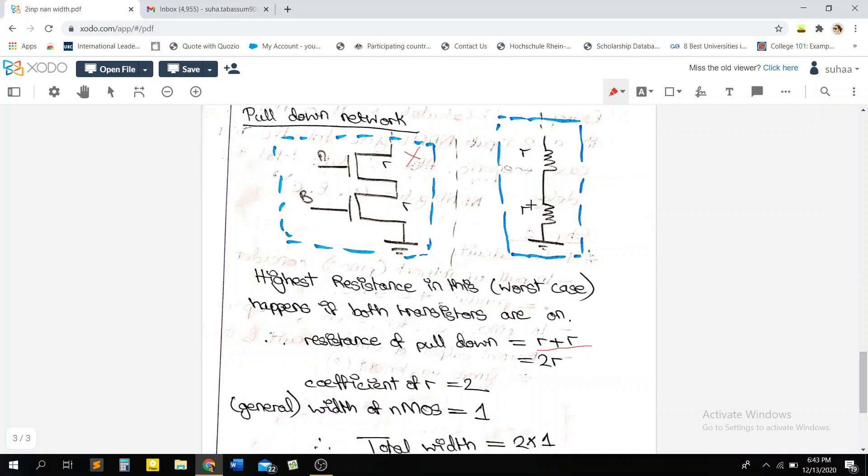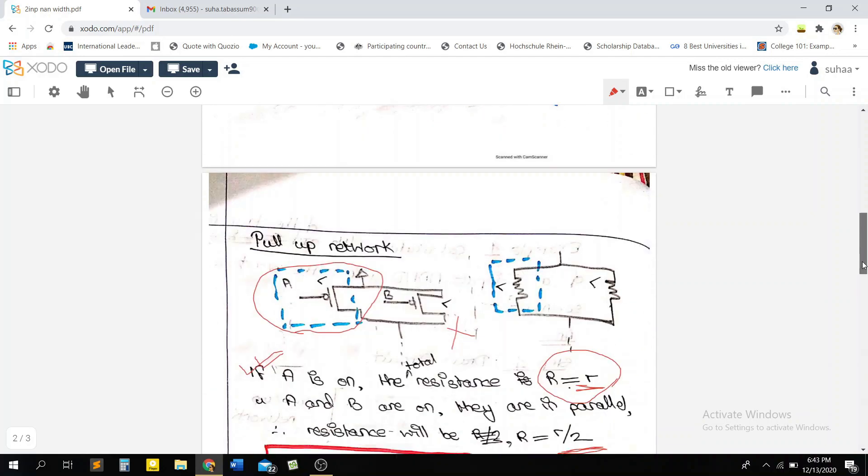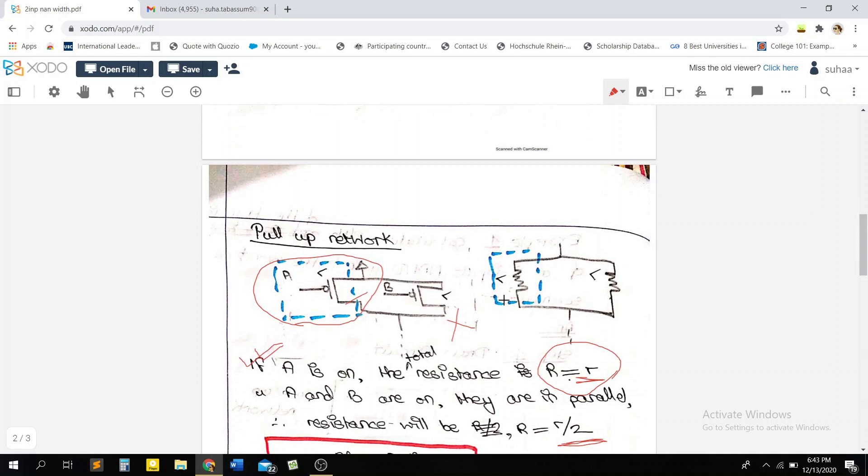Oh, I didn't mention this - the network can also be written like this, where each transistor is basically represented by a resistor. So I did the same thing here too, where each transistor is represented by a resistor.